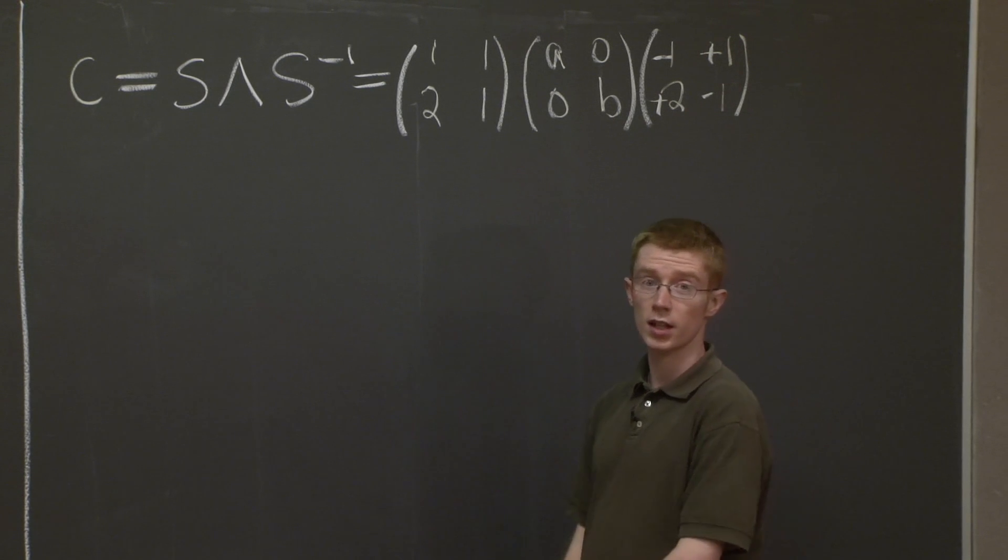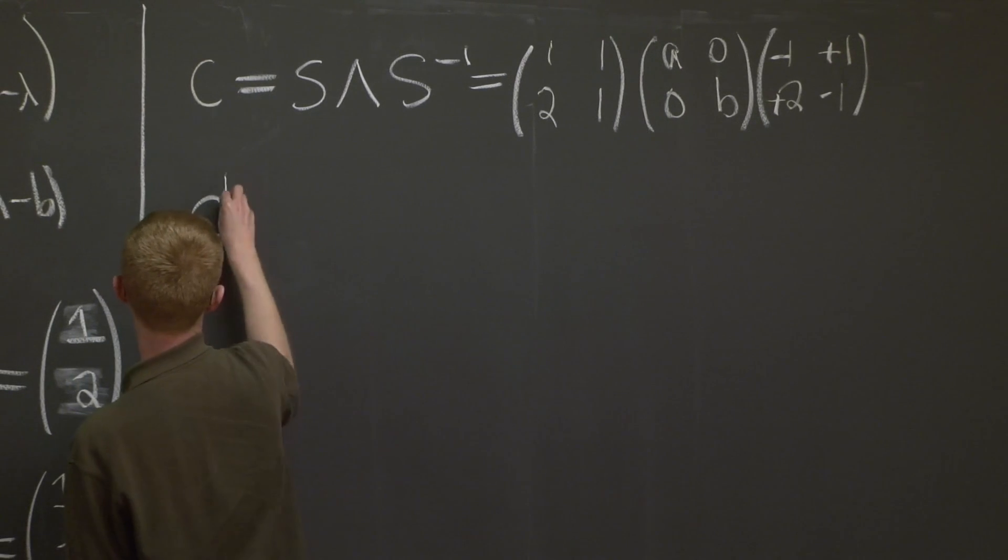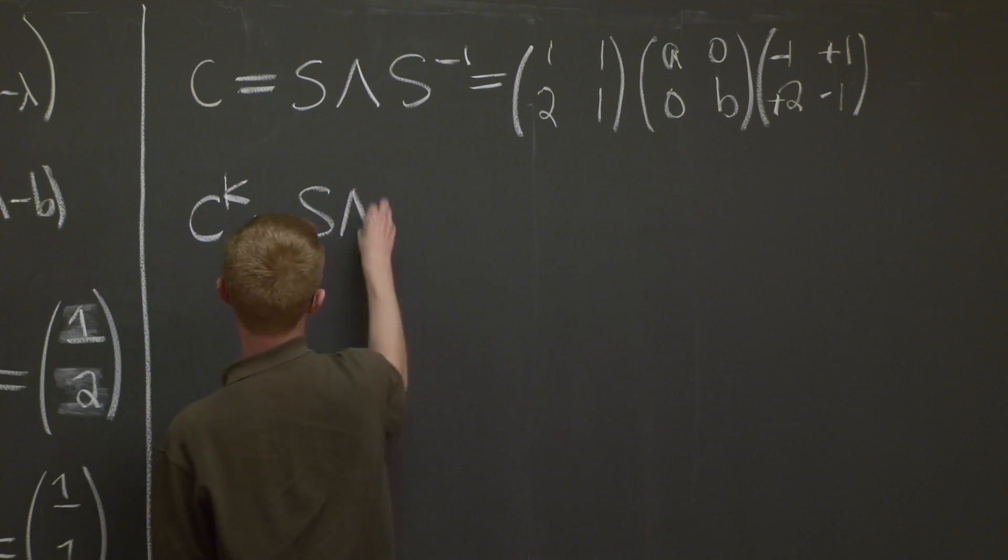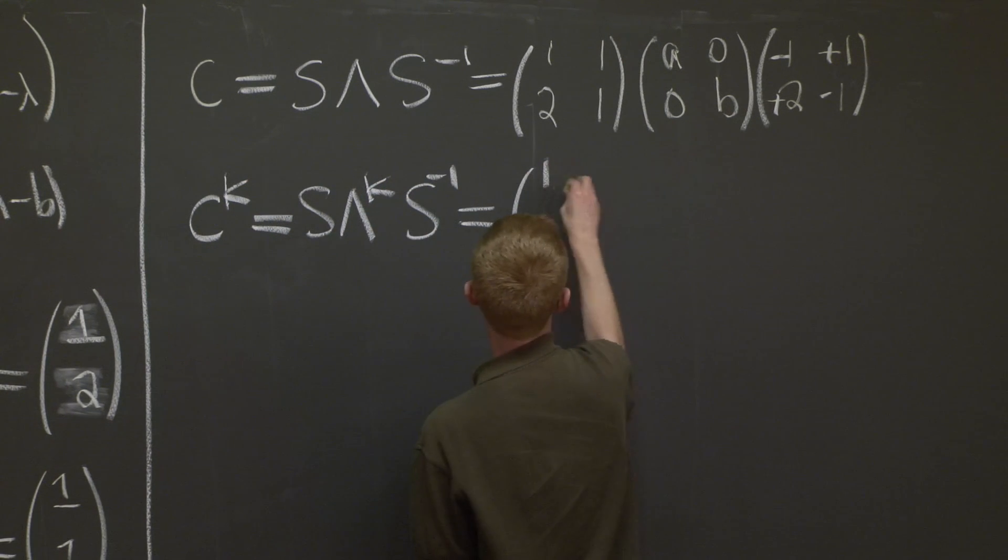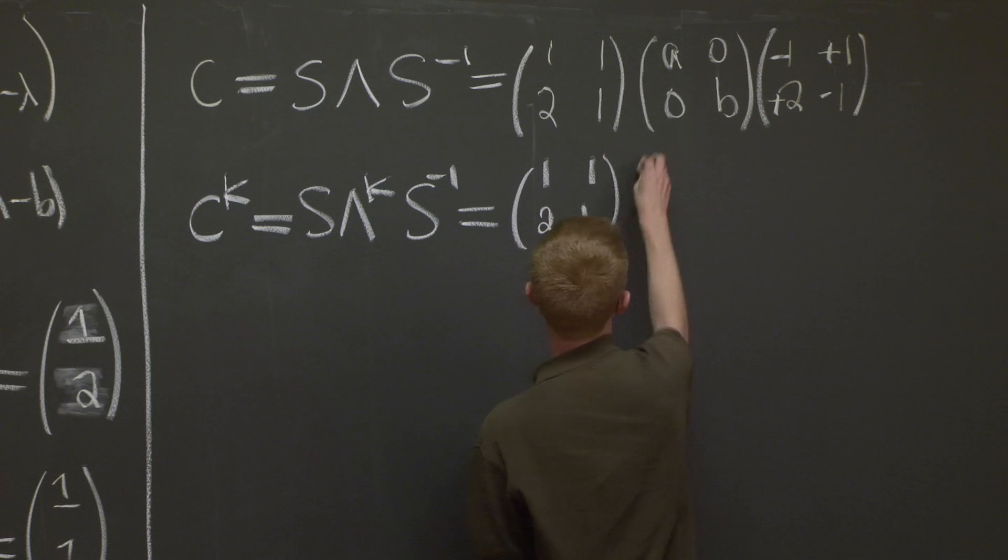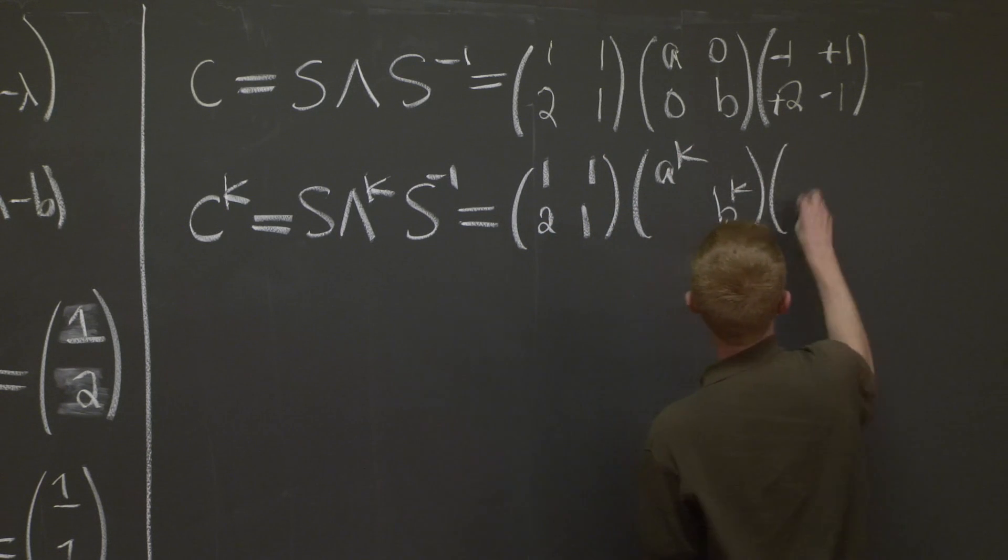Good. So this is our nice decomposition of C. Now how do we take powers of C? Well, C to the K is just S lambda to the K S inverse: (1, 1, 2, 1) times (A to the K, B to the K) times (negative 1, 1, 2, negative 1).